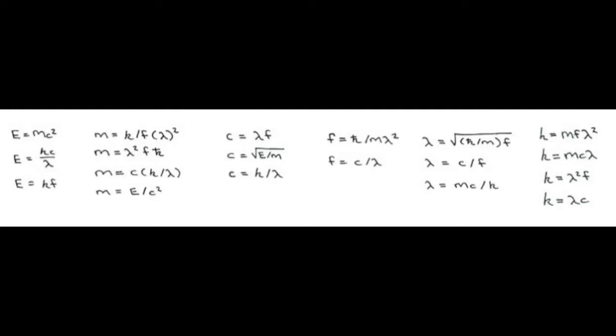E equals MC squared. Light speed, or 299,792,458 meters per second, equals the square root of one joule of energy per each square root of one kilogram of mass. C equals the square root of E over M.